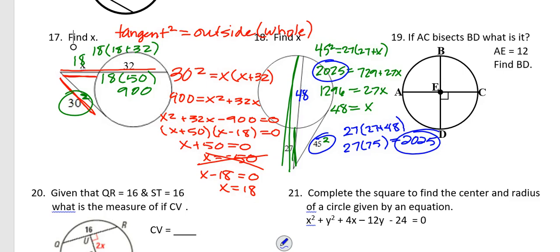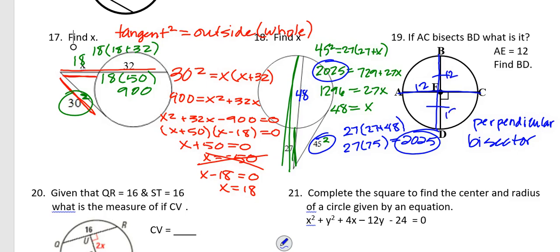Number 19: if AC bisects BD, that makes AC a perpendicular bisector. AE is given as 12 and is a radius, so BE = 12 and ED = 12. Therefore BD = 12 + 12 = 24.